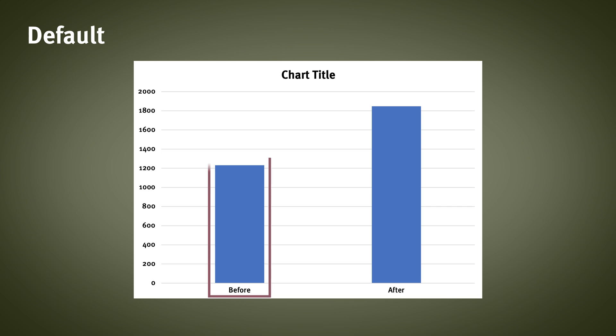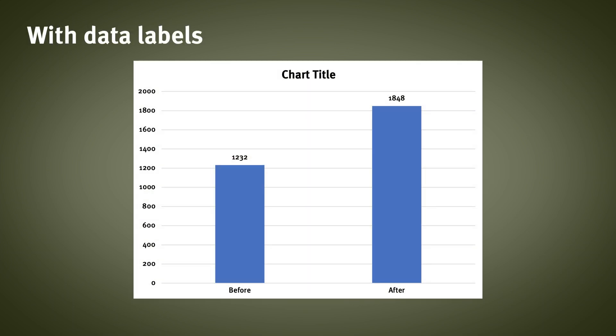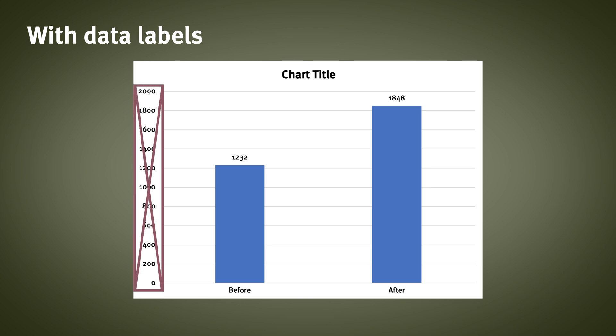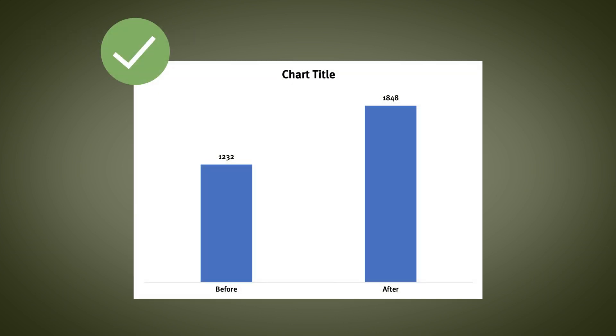Looking at that default chart, is the before value 1,210 or 1,215? We can add data labels to the end of each bar to help people see the precise value more easily. But when we add those data labels, suddenly we don't need the gridlines or the y-axis — they aren't necessary to determine the values anymore. So by adding one element, the data values, we've turned two other elements, the gridlines and the y-axis, into chart junk. So let's just remove those.